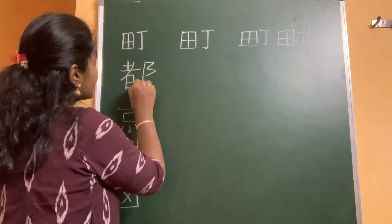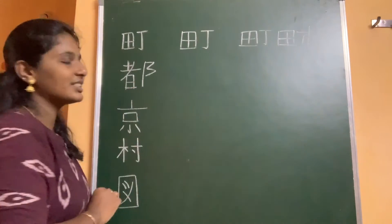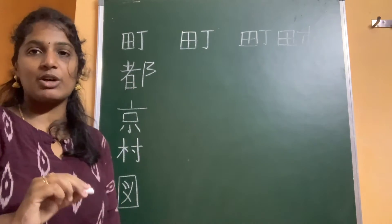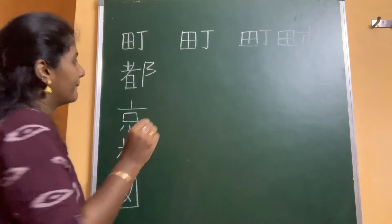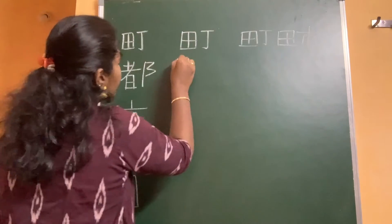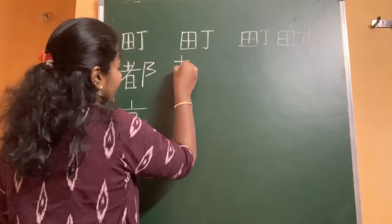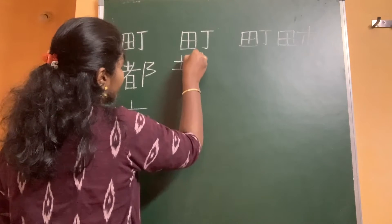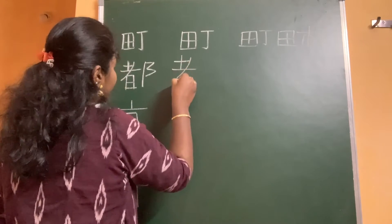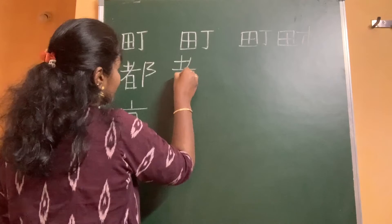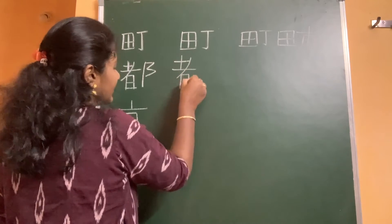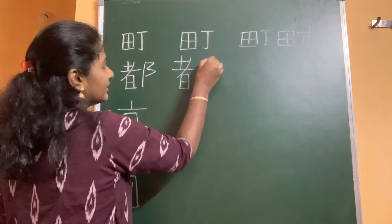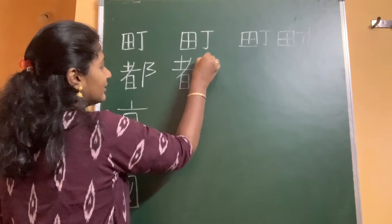Next, this is the kanji that means capital — Miyako or To. First stroke, second, third, fourth, fifth, sixth, seventh, eighth, ninth.